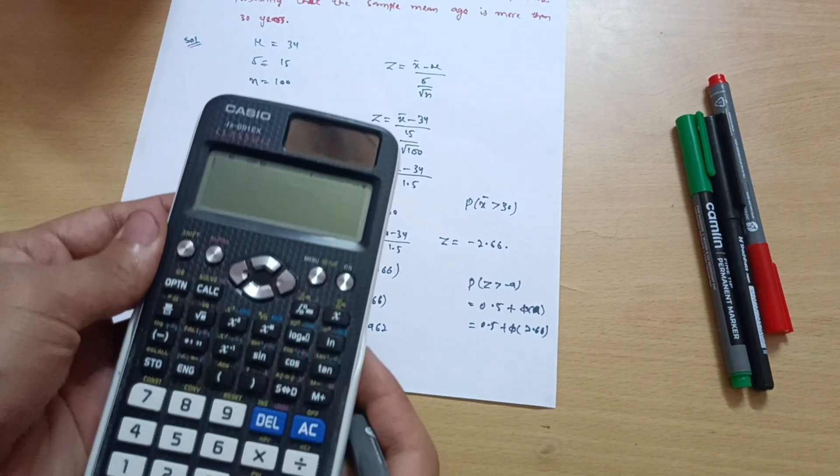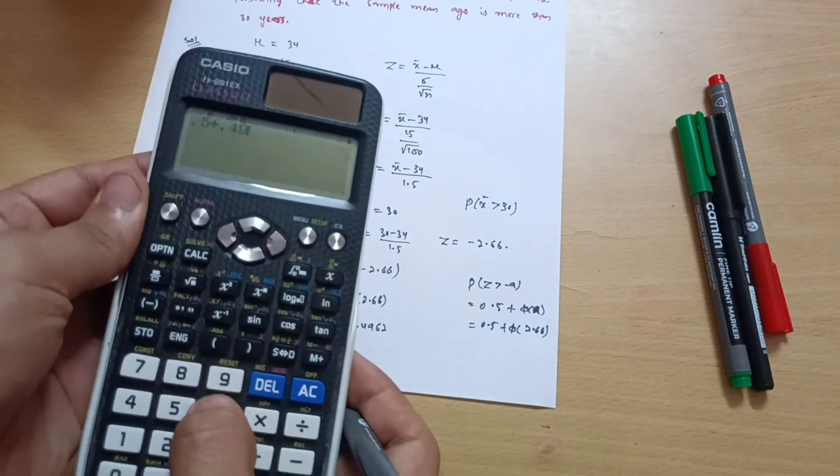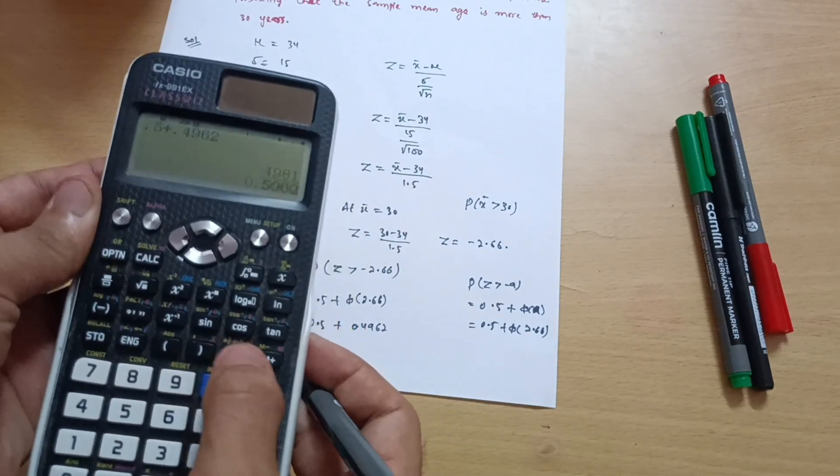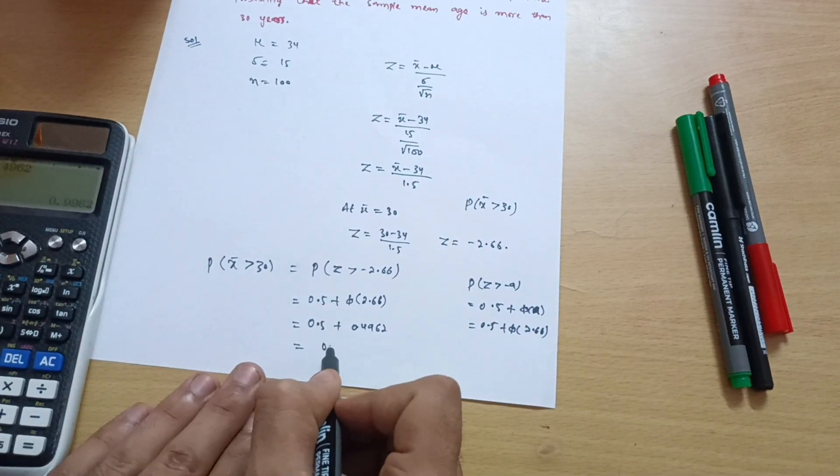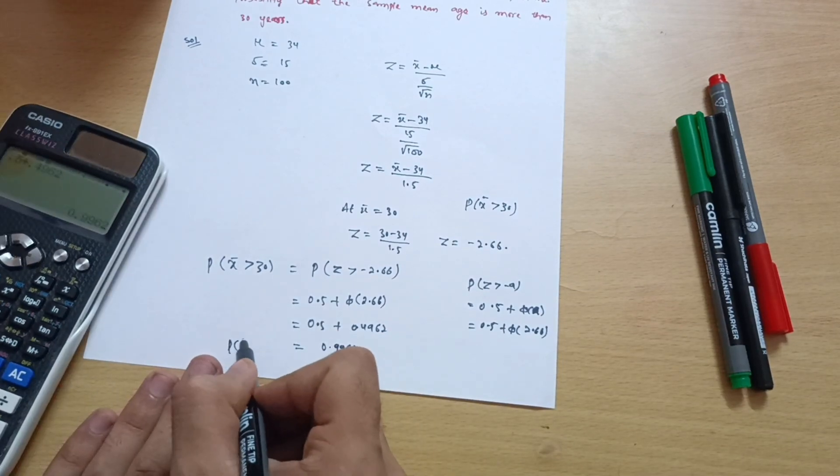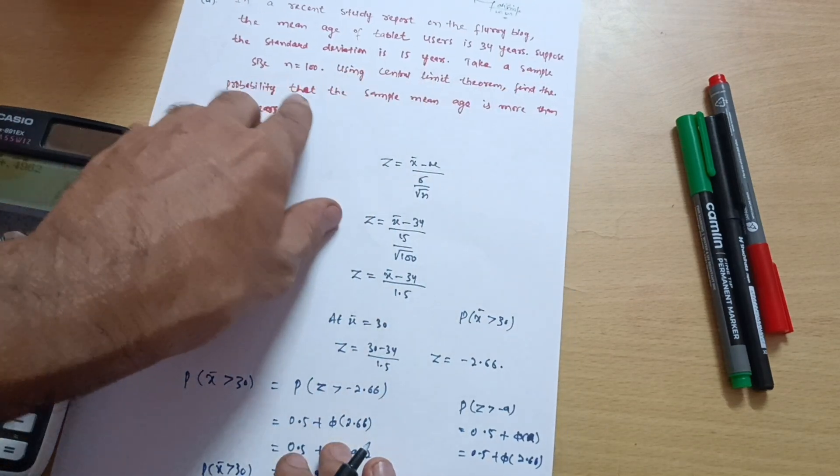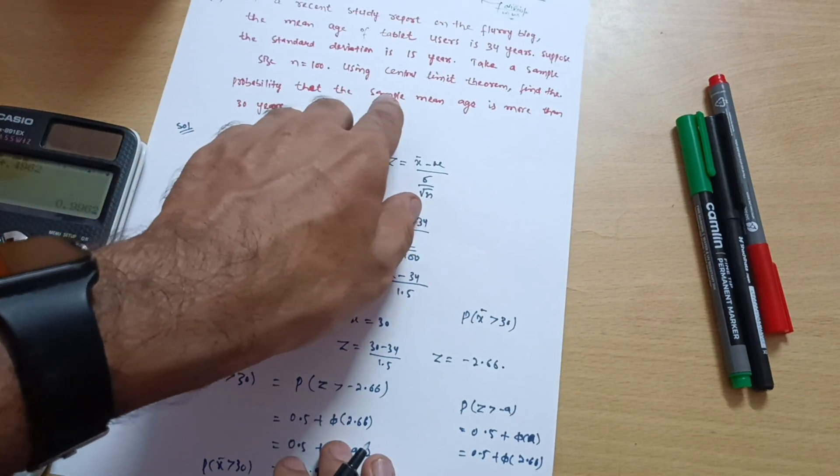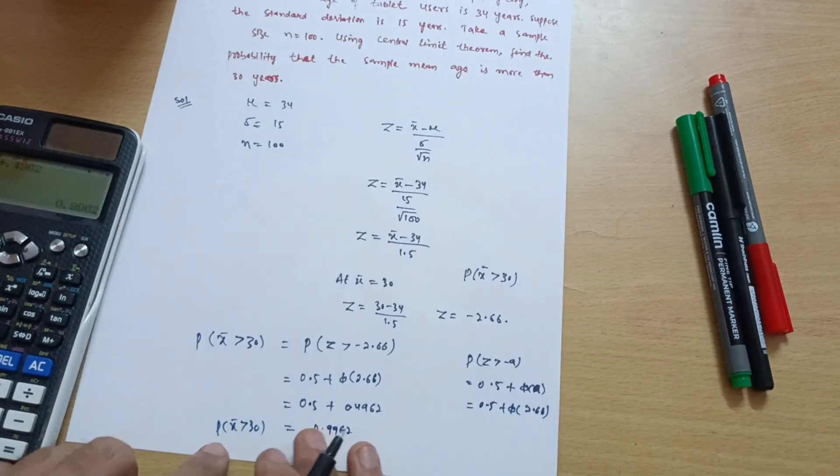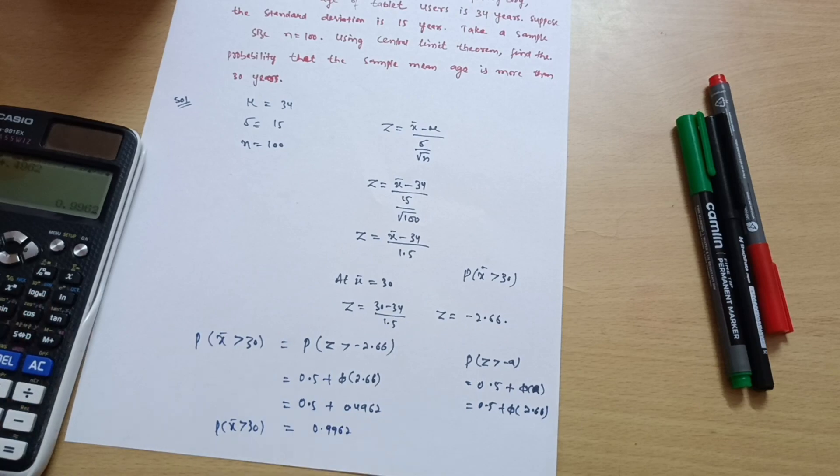0.5 plus 0.4962, which is equal to 0.9962. So you will get the probability of x̄ greater than 30 as 0.9962, almost equal to 1. It was in the question, find the probability that the sample mean age is more than 30 years. So its value is 0.9962. So this is all about today's problem. Thank you.